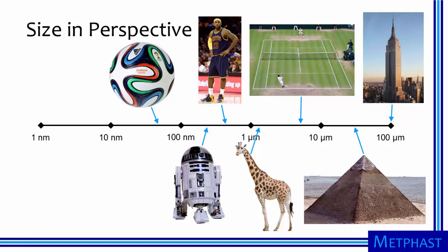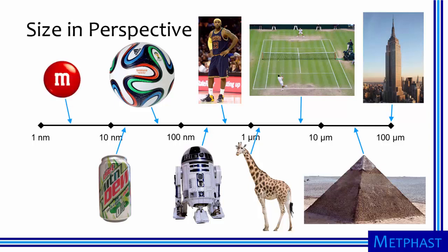A can of Diet Dew — my personal favorite — would be 15 nanometers in diameter at its widest. Finally, an M&M would be 2.3 nanometers in diameter if the Empire State Building were 100 micrometers tall.